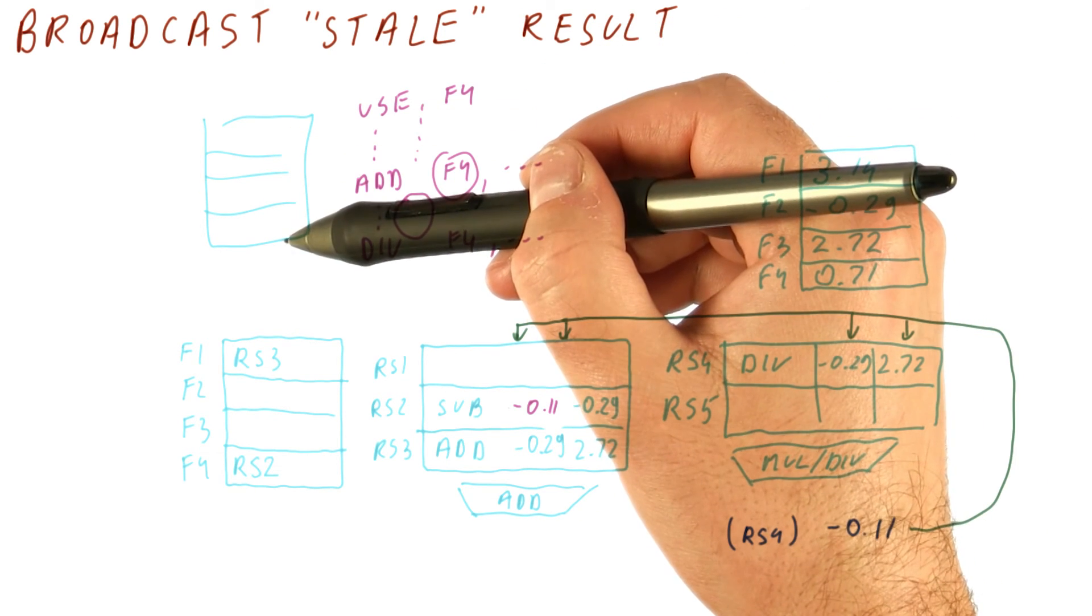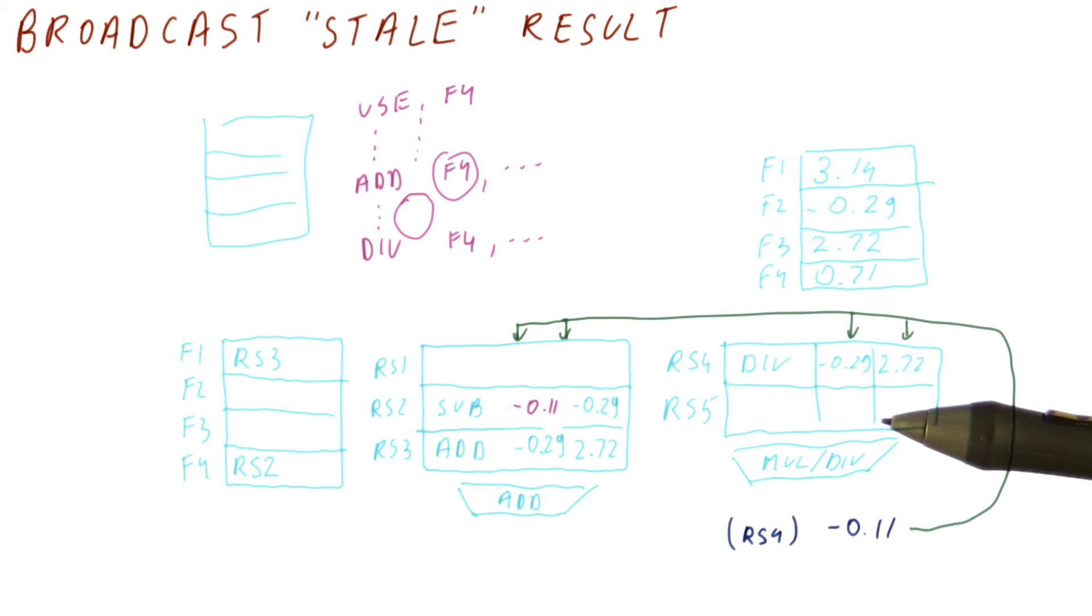But because the add has already been renamed, the instructions that we are renaming now and that we are getting results from the register file, those instructions actually need the value from the add, so they really don't need anything from this divide.